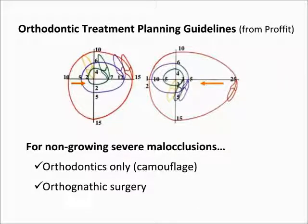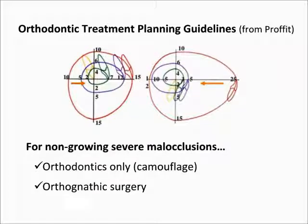Severity of malocclusion is a dominant factor in orthodontic treatment planning. Proffit's well-known envelope of discrepancy provides reasonable estimates of the limits of tooth movement for growing and non-growing patients, including orthognathic surgery. These limits are not based in scientific facts but rather are the opinion of an expert as to what is possible within periodontal safety and stability. It is the responsibility of the clinician to offer a treatment plan appropriate for the diagnosis that will accomplish desirable aesthetic and functional outcomes as well as stable results.